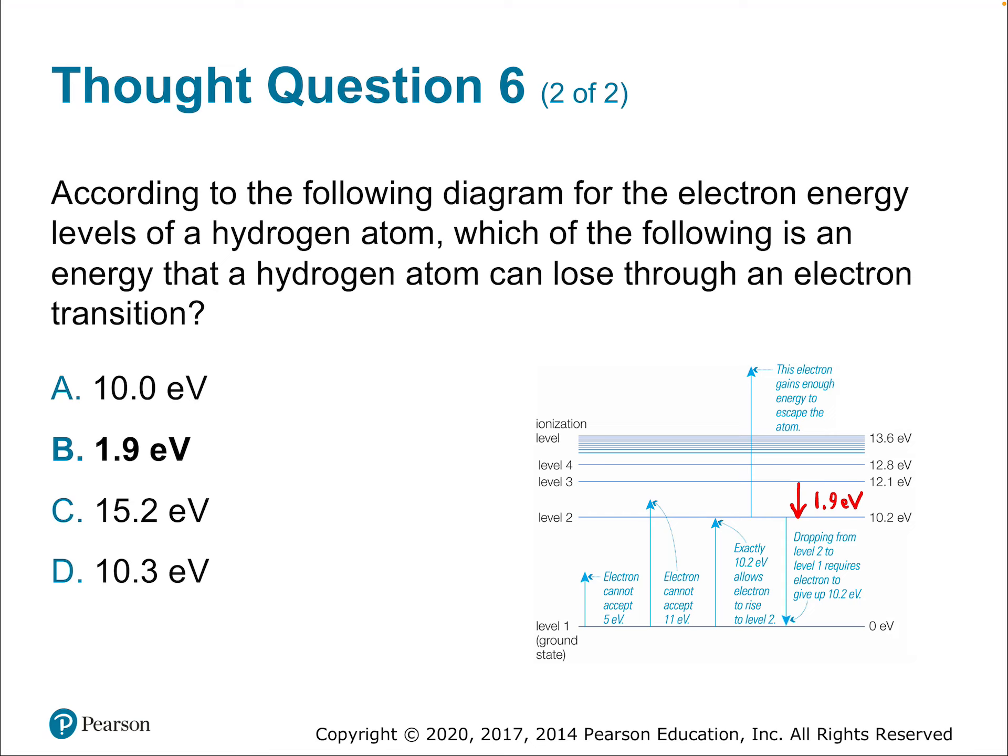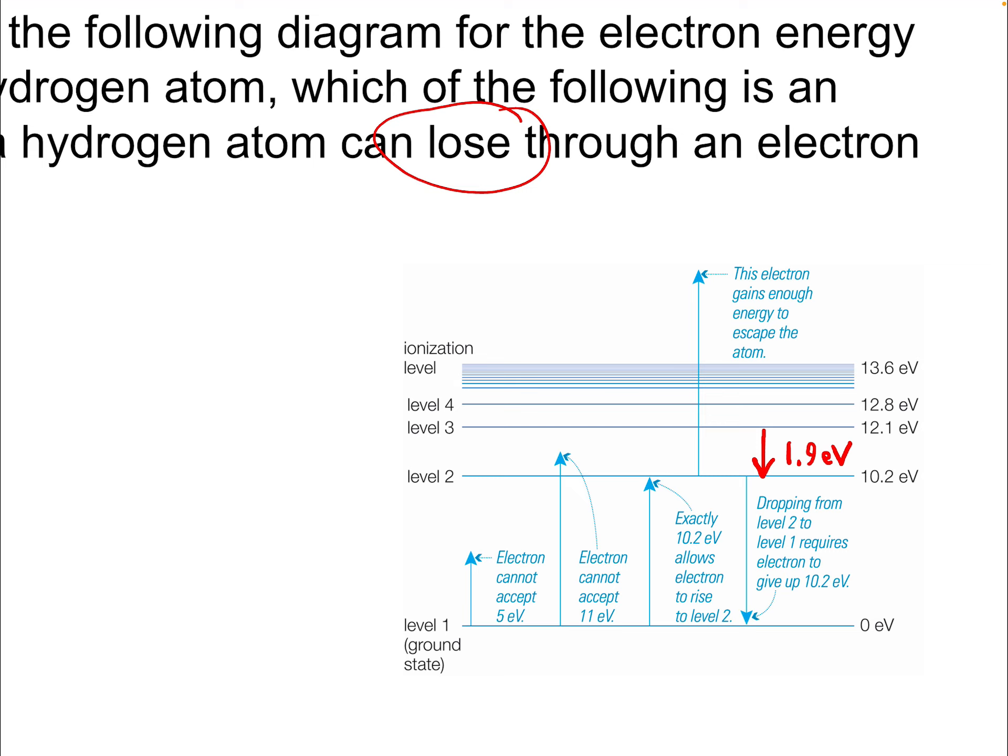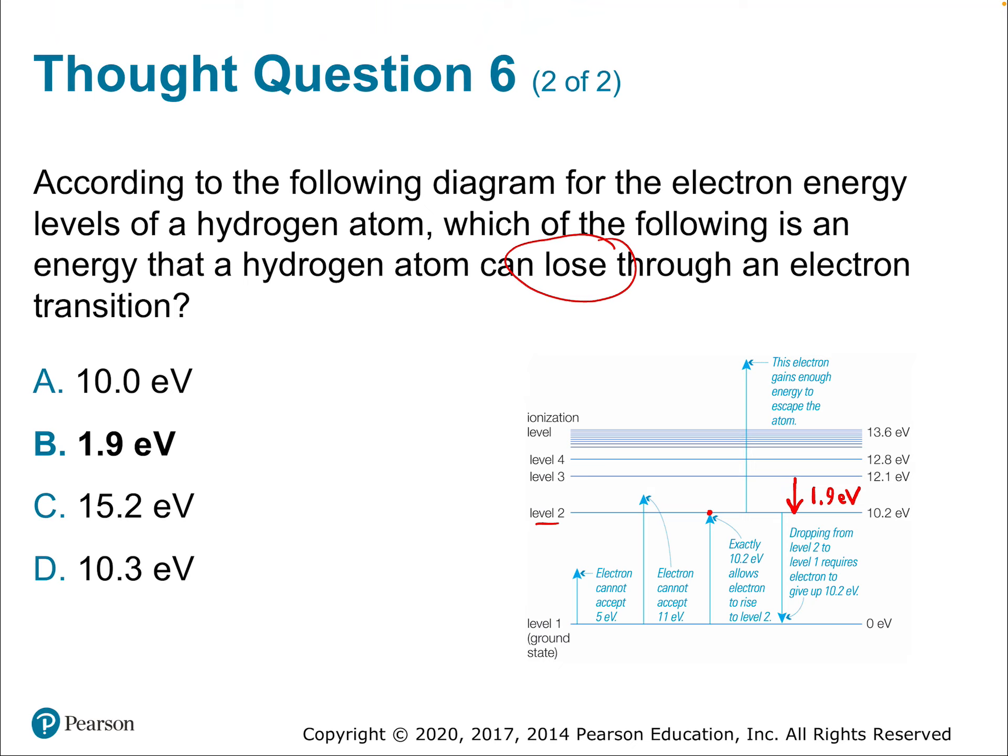We mentioned which of the following is the energy that a hydrogen atom can lose. Now we could say gain too. Any step that the electron can take in one direction, it can take the other way. But no electron will stay in the higher energy level for long. They get excited up to there, and then they will go back down. Not instantaneously, there's a delay of some fraction of a second usually. The electron doesn't stay excited. It's an unstable situation. It will relax back down.